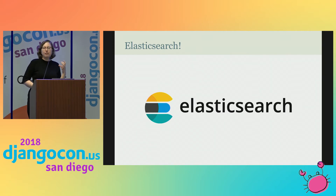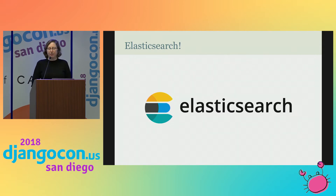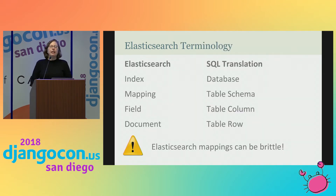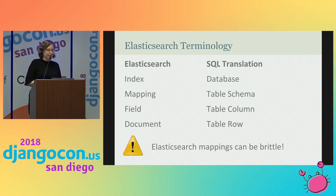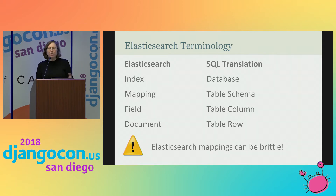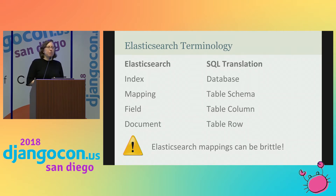Elasticsearch is an open source project written in Java, built and maintained by the folks at Elastic — a company-backed, well-funded open source project. The terminology is a little different because Elasticsearch itself is not a database and it's not really a document store — it's an actual search engine, but it has a lot of similarities to SQL. An Elasticsearch index is kind of like a database. You define mappings which sort of act like a schema. Fields are kind of like columns, and because Elasticsearch is document-based, a document kind of resembles a row.